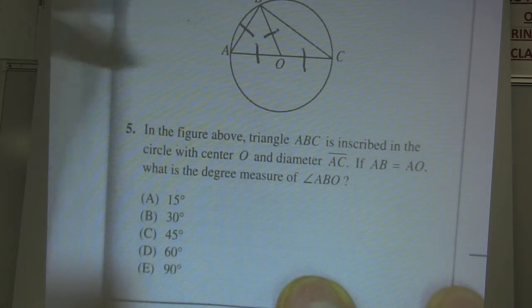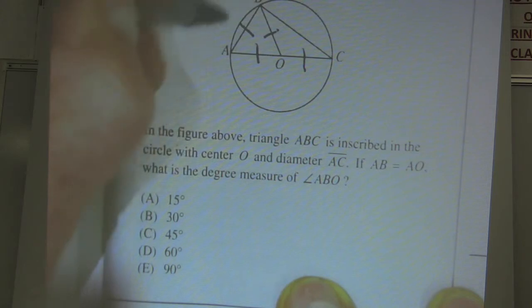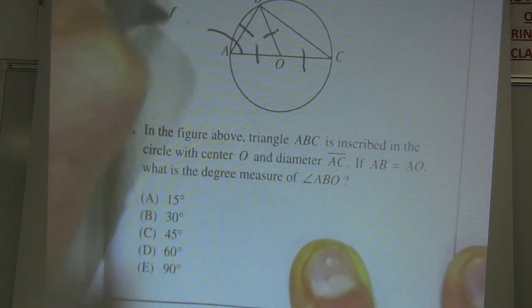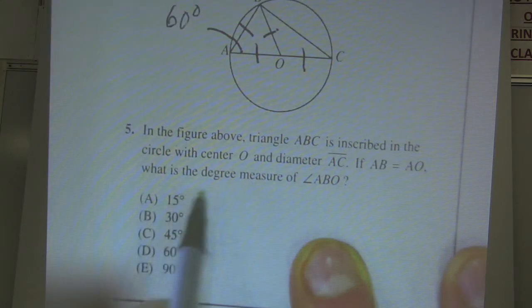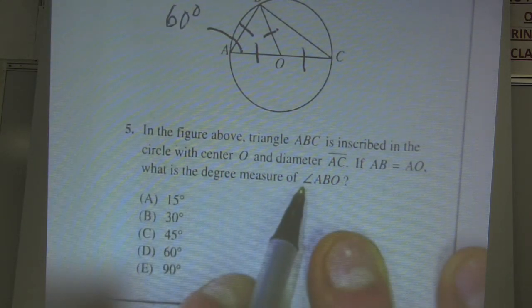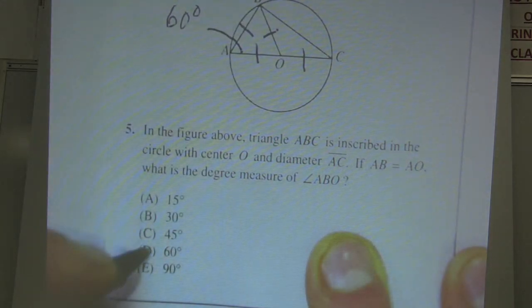So is OC and so is OB. Those are all radii, and all radii of a circle are equal. Well, look, just from my markings, this is an equilateral triangle. Equilateral triangles are also equiangular, which means every angle in that triangle is going to be 60 degrees. Well, it looks like that's what we want. What's the degree measure of angle ABO? ABO. It's also 60. Choice D.